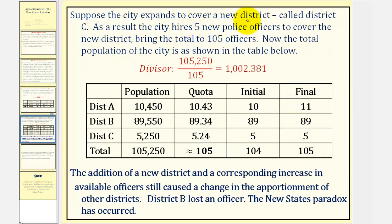Now suppose the city expands to cover a new district called district C. District C has a population of roughly 5,000, which is a 5 percent increase from the previous population. As a result, the city hires five new police officers to cover the new district, bringing the total to 105 officers. So the population increased by approximately 5 percent, and the number of officers also increased by 5 percent. Now we'll apportion the 105 officers using Hamilton's method. To find the standard divisor, we take the total population of all the districts and divide by 105, giving us a divisor of approximately 1,002.381.